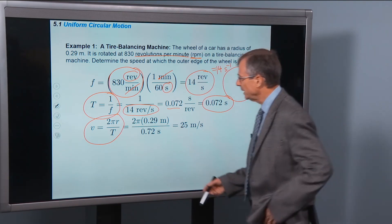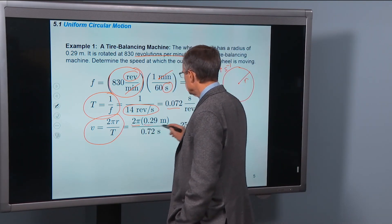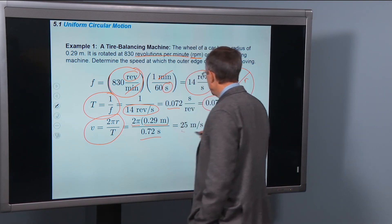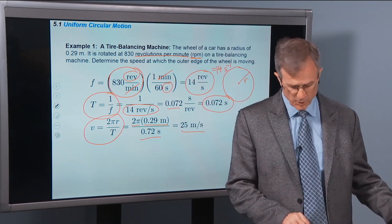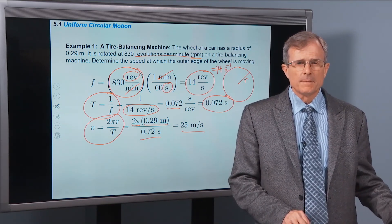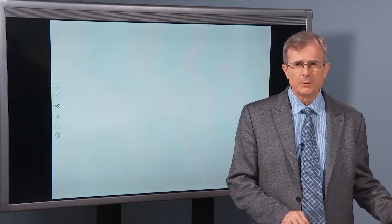Then finally we have everything we need. We've got 2π times the radius divided by the period is 25 meters per second. So that's how fast that outer edge of the rotating balancing machine will be moving.